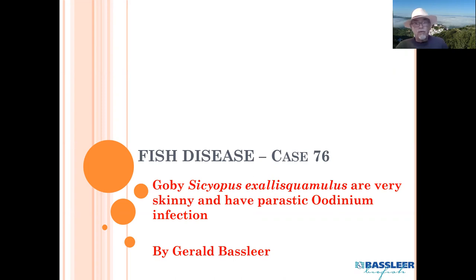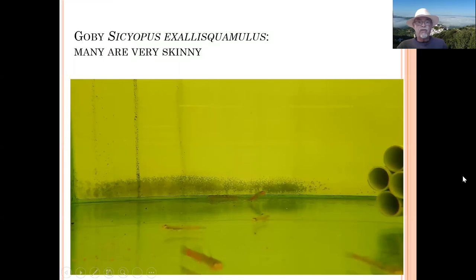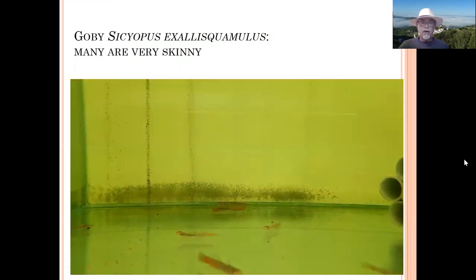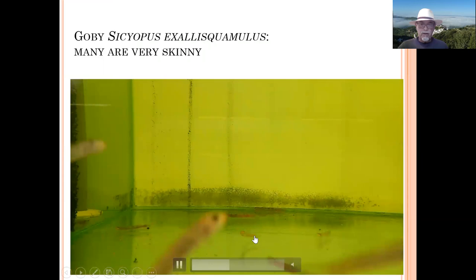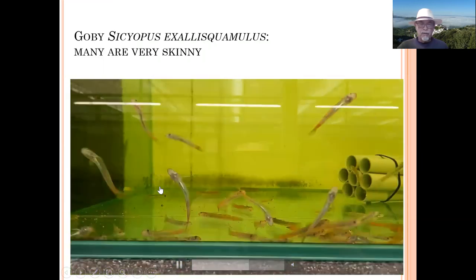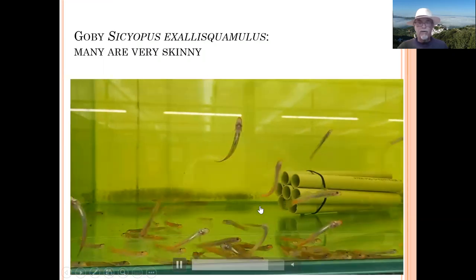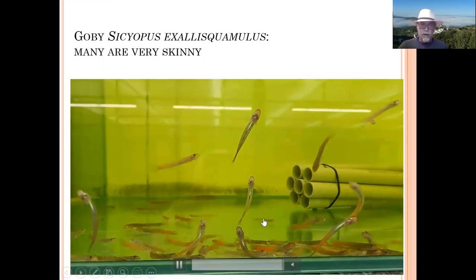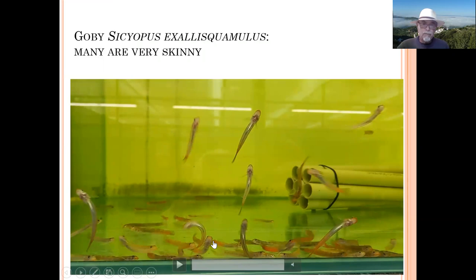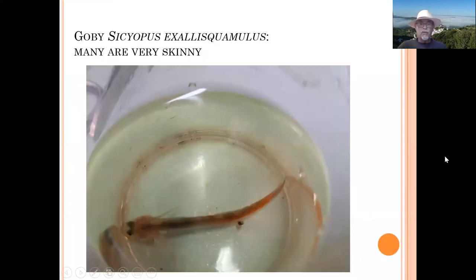Sometimes wild-collected fish can have serious problems, and like this one, they became skinny and were dying. We found a parasitic Oodinium infection. This is fish disease case number 76. You can see some are very skinny, sitting here separated, and I will explain in my diagnosis what we did find.